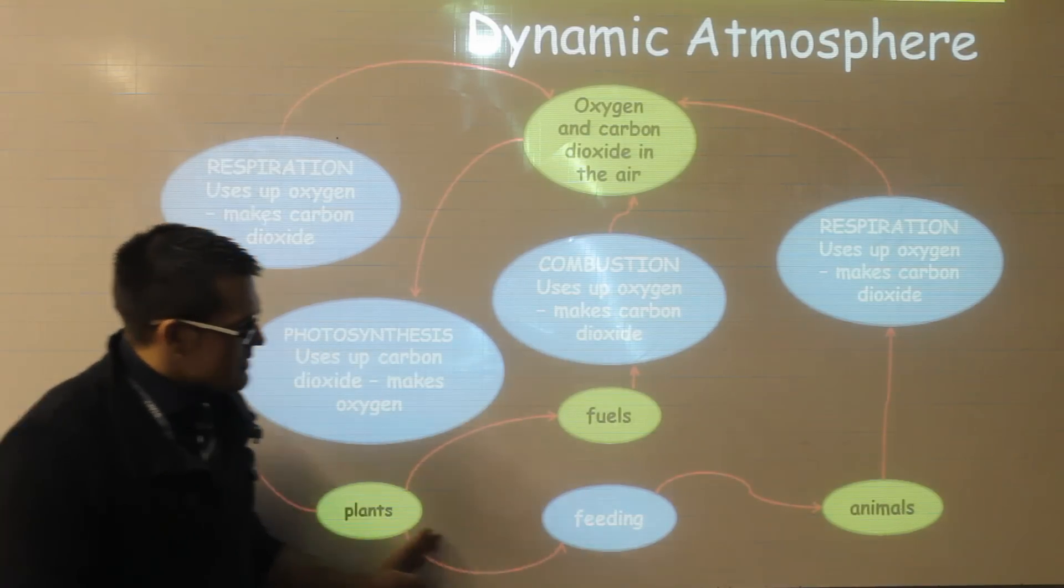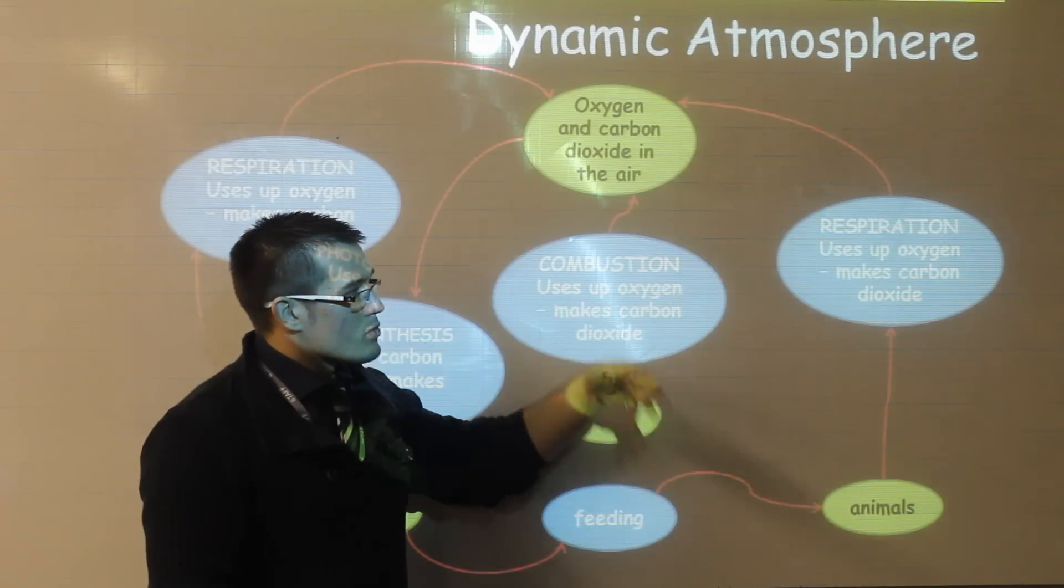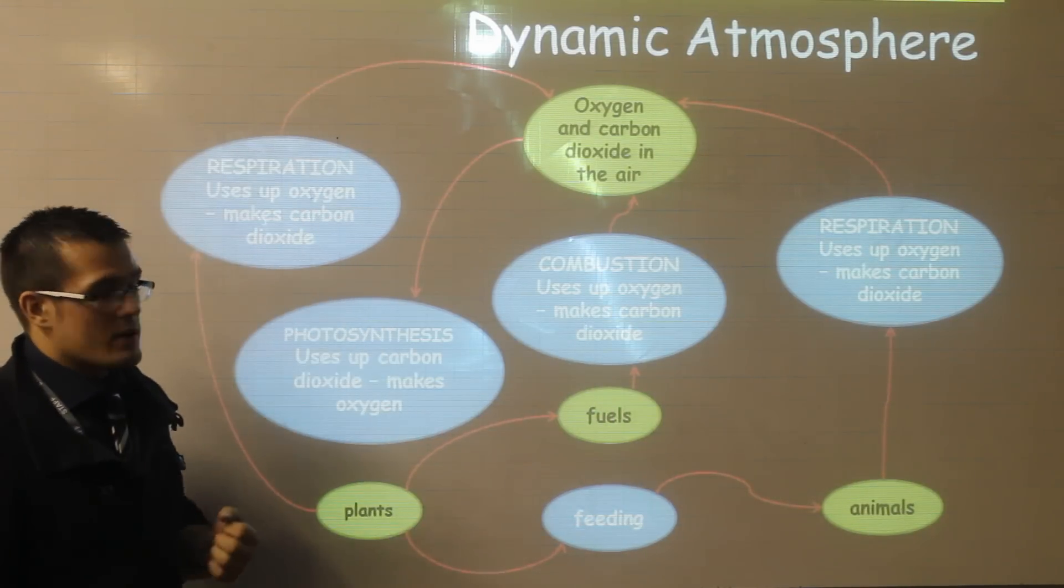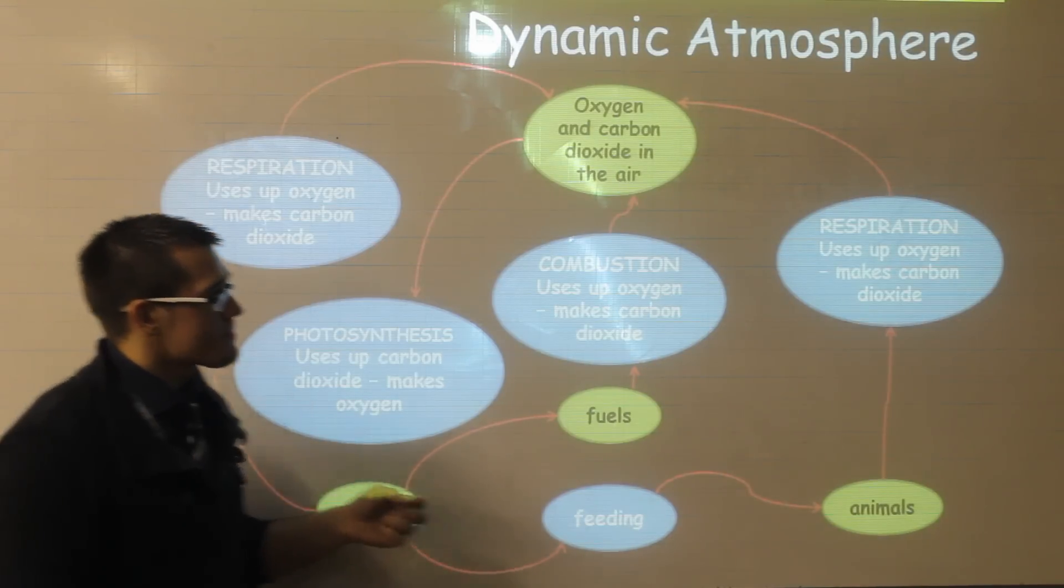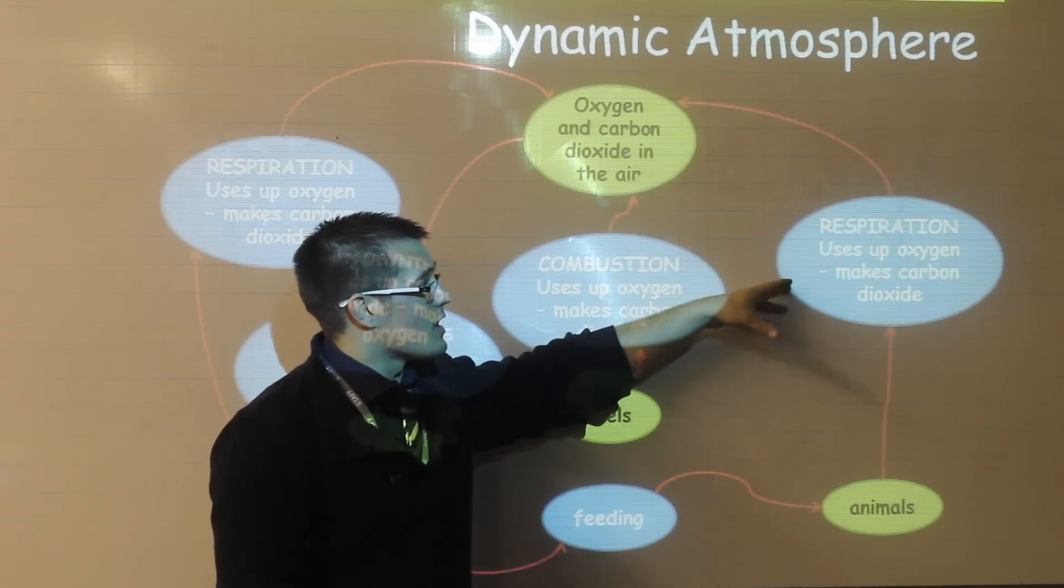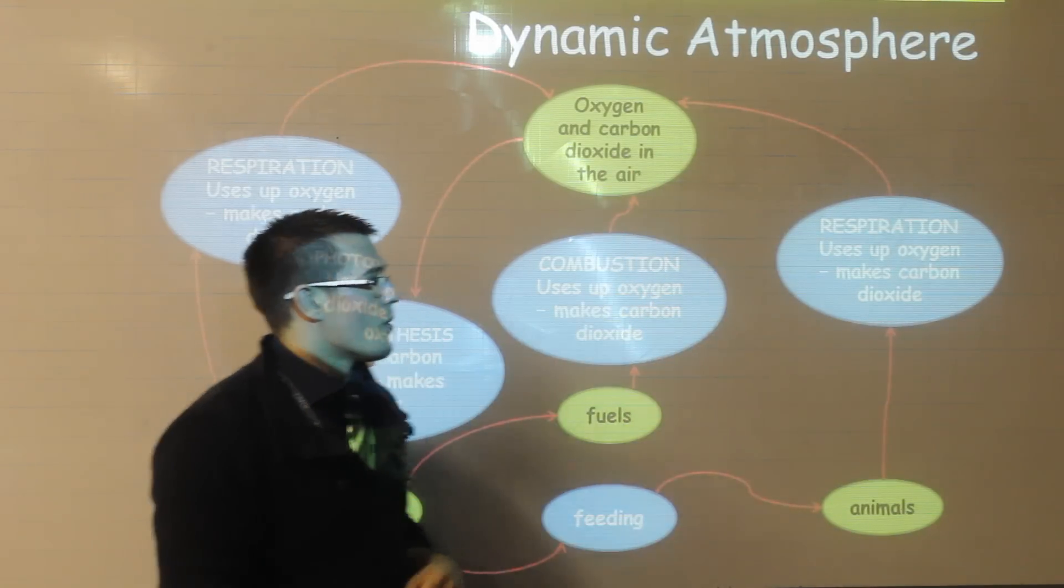If we go along from plants, plants are fed on by animals and animals like plants will also carry out respiration. So as humans we breathe in oxygen and breathe out carbon dioxide. That again is going to decrease the amount of oxygen in the atmosphere but increase the amount of carbon dioxide.